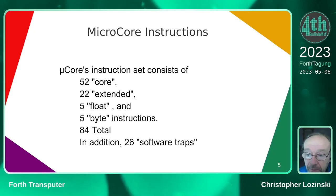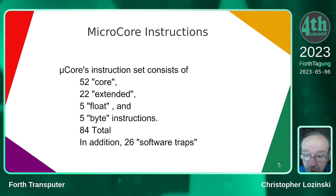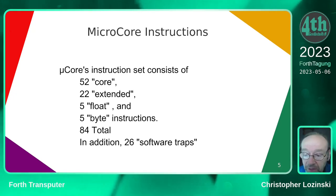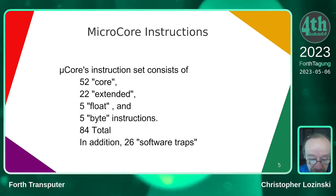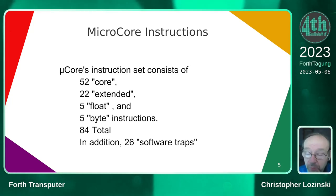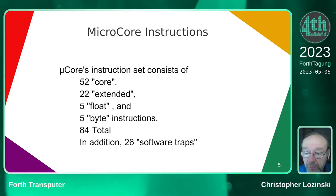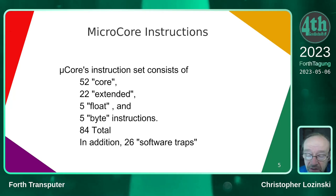If it's multiprocessing, it can begin another one of the communicating sequential processes. The micro core has a lot of instructions: 52 core, 22 extended, 5 float, 5 byte instructions — 84 total, plus software traps. If I'm trying to write an instruction using reduced instruction set computing with lots of little instructions, I'm pretty sure that's going to consume a lot more energy than one fat instruction implemented in silicon, with far fewer transistor transitions consuming energy. So fat instructions are a really good idea for low energy consumption.